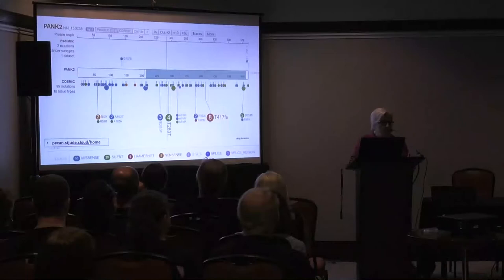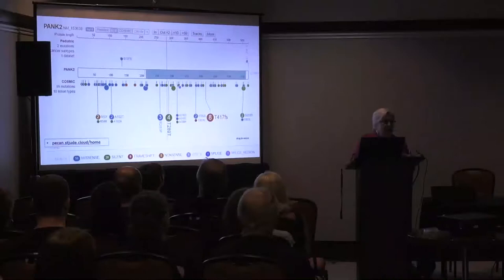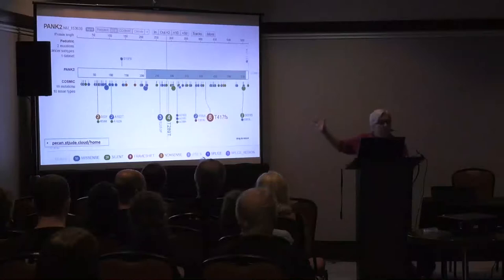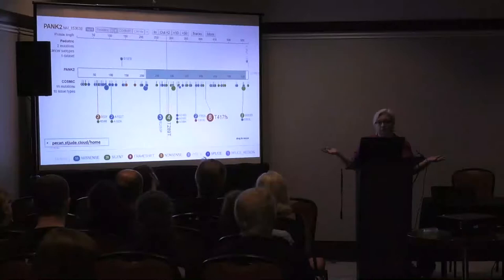PECAN is spelled that way because it stands for pediatric cancer — it actually started from a pediatric cancer genome project, but while they were at it, they decided to map mutations in a lot of other rare diseases as well. The bigger circles indicate more prevalent mutations. Depending upon where the mutation is, you get different degrees of severity of the disease, because you have different degrees of activity of the protein.